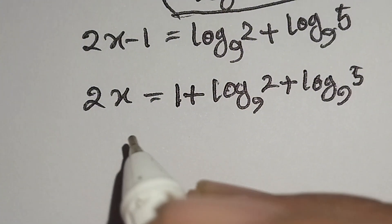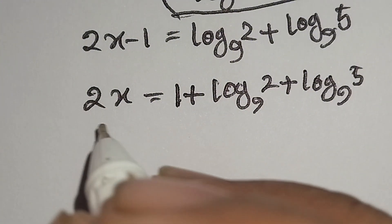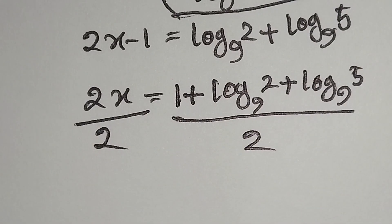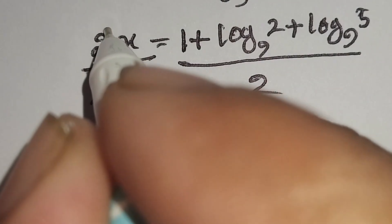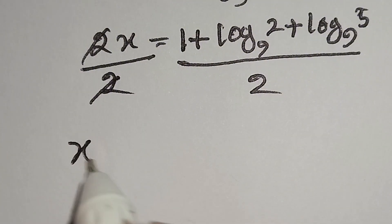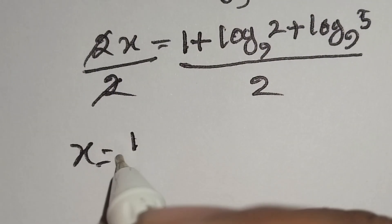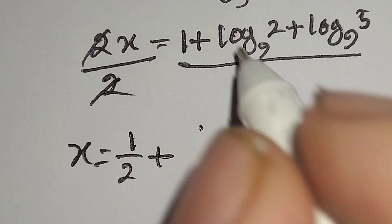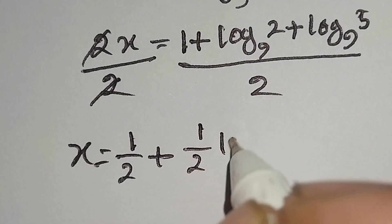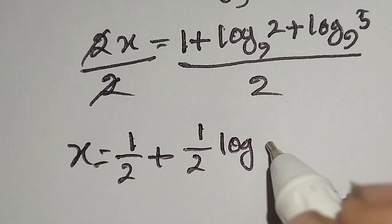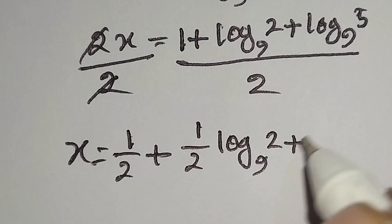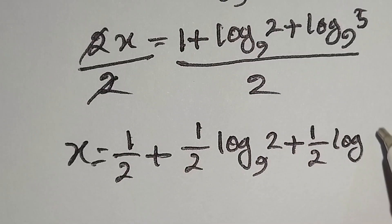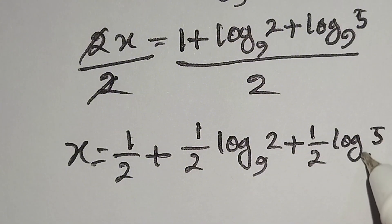Now we will divide both sides by 2 to eliminate it. So x is equal to 1 over 2 plus 1 over 2 times log 2 to the base 9 plus 1 over 2 times log 5 to the base 9. This is our final answer.